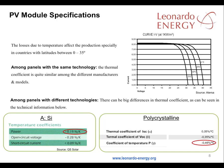Losses due to temperature affect production, particularly in countries near the equator with latitudes between 0 and 35 degrees. Where the panels use a matching technology, the thermal coefficient is quite similar between different manufacturers and models. Where the panels use different technologies, there can be big differences in the thermal coefficient and in performance, as you can see from this slide.